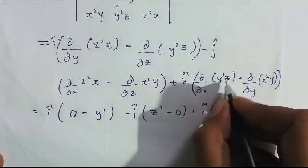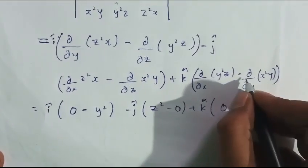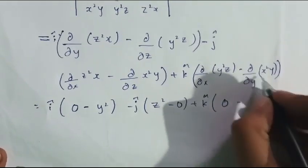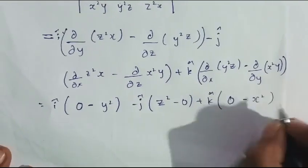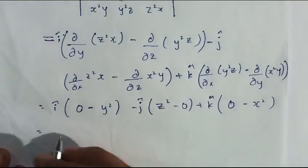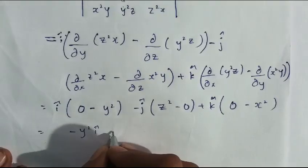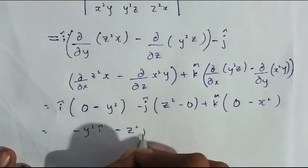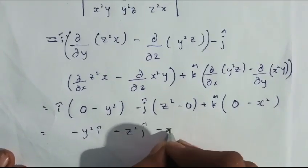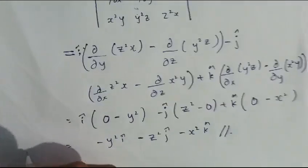Evaluating each term: differentiation of z²x with respect to y is 0, differentiation of y²z with respect to z is y²; differentiation of z²x with respect to x is z², differentiation of x²y with respect to z is 0; differentiation of y²z with respect to x is 0, differentiation of x²y with respect to y is x². Therefore, curl of f = -y²î - z²ĵ - x²k̂.